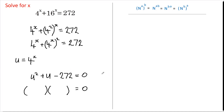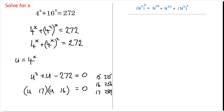That means the numbers have got to be pretty close together. I know that 15 squared is 225, 16 squared is 256, and 17 squared is something like 289. So with 272 lying in the middle, the numbers are probably going to be 16 and 17. So we put 16 there, 17 there, and u in each factor.